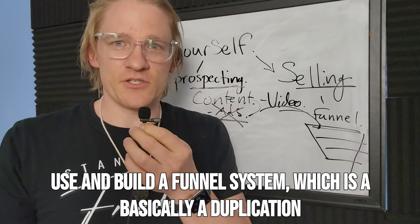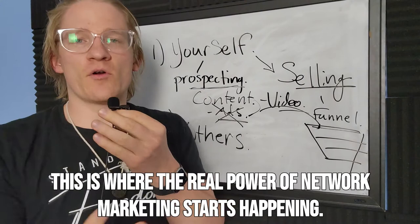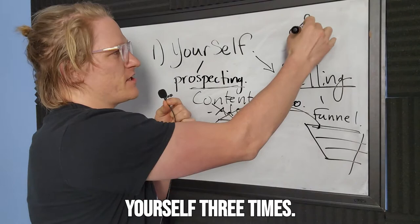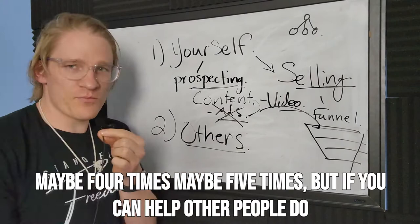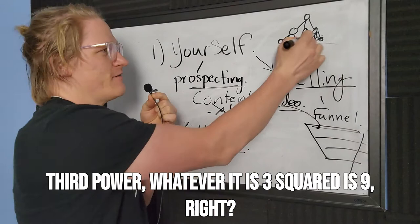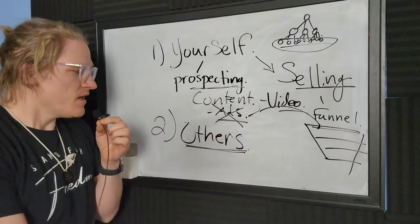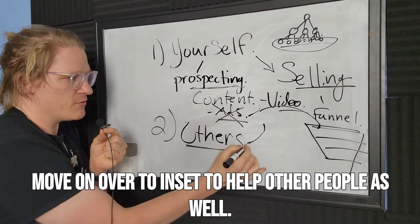The cool thing about funnels is that it allows you to duplicate not just yourself, but then you can help others. This is where the real power of network marketing starts happening. Because if you can duplicate yourself maybe three, four, or five times, that's great — but if you can help other people do that, things start becoming exponential. Three squared is nine, so it can grow very quickly. You're getting results off an entire network, so you need to create a duplication system that works for others as well.